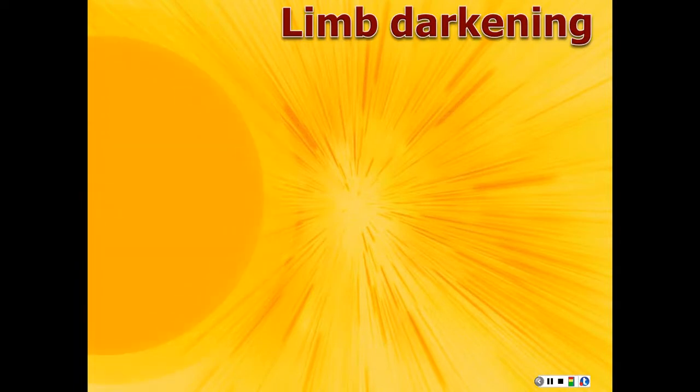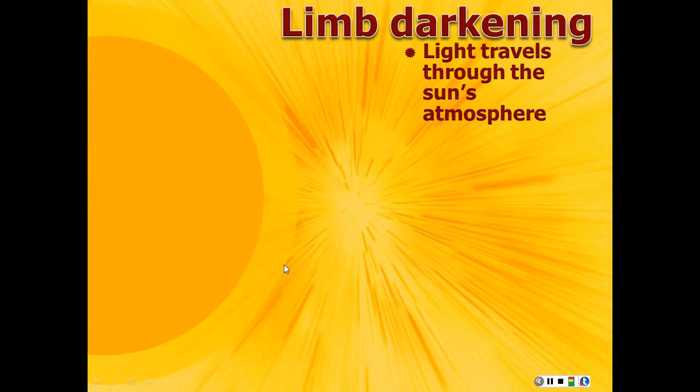So, here I have the Sun. Here's the Sun. Here's the photosphere. It has a finite depth. This is not to scale. And so the light travels from here at the bottom of the photosphere through the photosphere. And so it travels a certain distance. At some point, you stop being able to see through it.